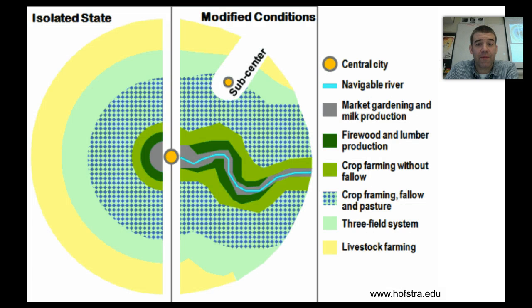This is just another example or another model showing some of the different factors that might modify the conditions like another city, again a river that would distort the model.